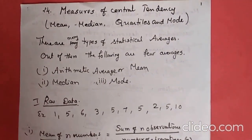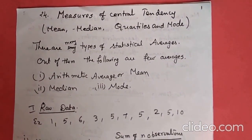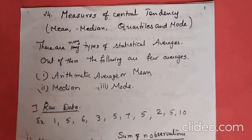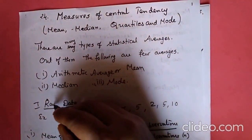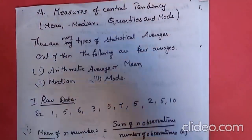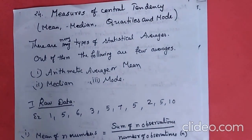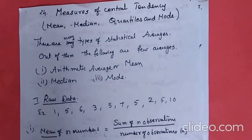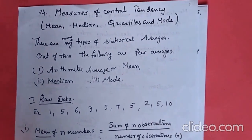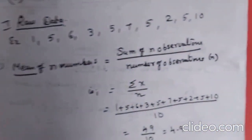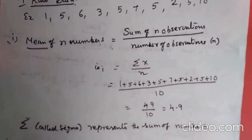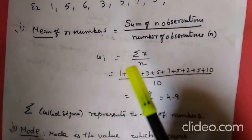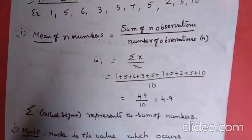For this raw data, you are going to find the mean, median, and mode. Now, mean of n numbers: the formula is sum of n observations divided by number of observations. That is sigma x by n.